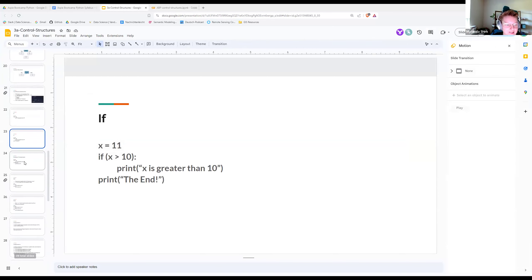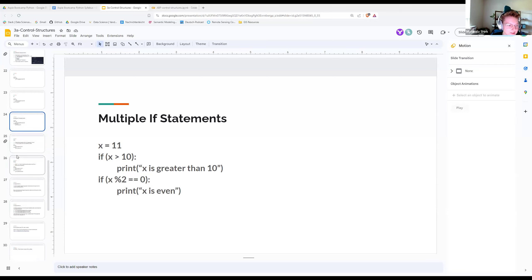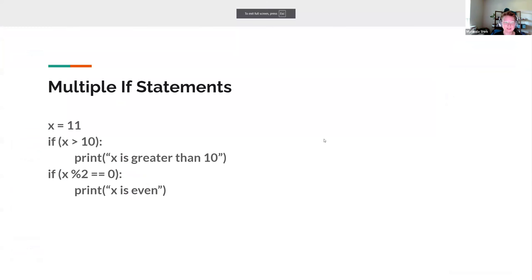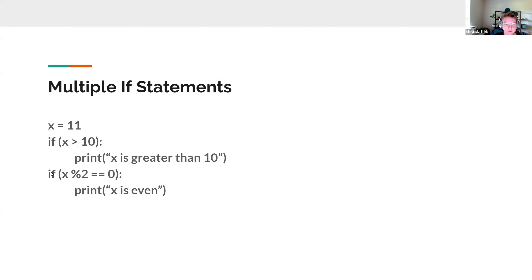You can have multiple if statements — check as many conditions as you want. For example, check if x > 10, and then also check if x mod 2 == 0 (meaning there's zero remainder when x is divided by 2). You could even put an if statement inside an if statement — that's called nesting. You can run these in sequence if you want.